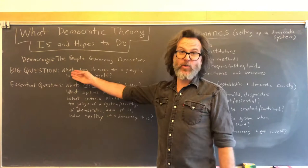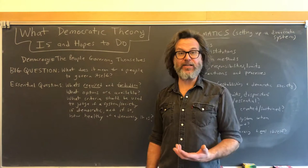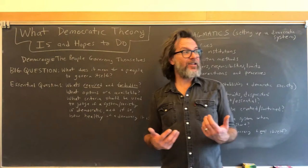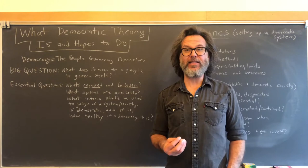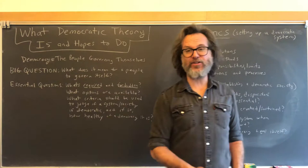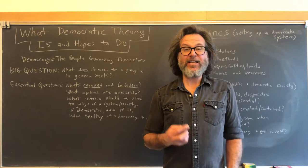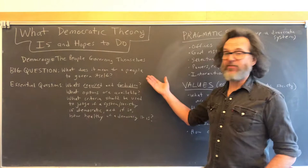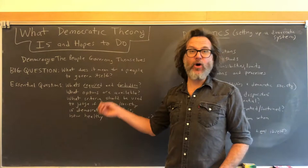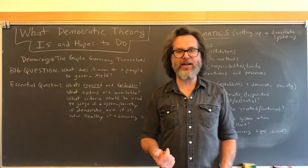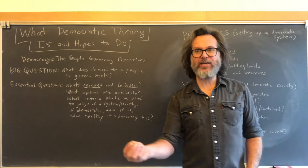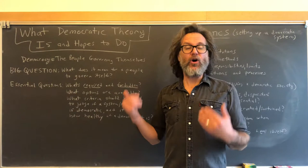The big question it raises is: what does it mean for people to govern themselves? If we define democracy as the people governing themselves, what does 'govern themselves' actually mean? This is the core question of democratic theory. All the ideas, pragmatics, and institutions we'll explore in this class are geared towards trying to create a world in which the people govern themselves. That big question is always going to be the background guiding question of our exploration.